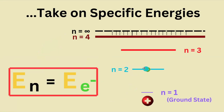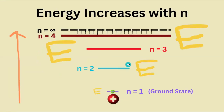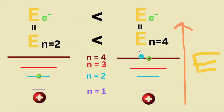So if the electron occupies the second shell, for instance, it will have exactly the amount of energy associated with that n equals 2 shell. It's crucial to recognize that energy increases as n increases — i.e., as our electron gets further and further away from the nucleus. This electron in the 4th shell has more energy than the one in the n equals 2 state.